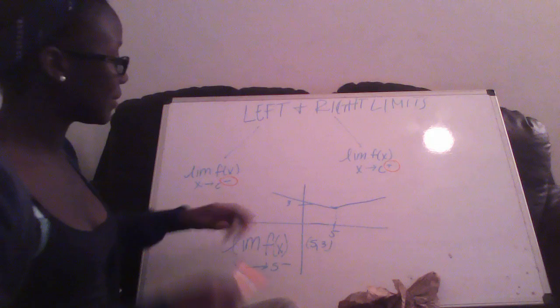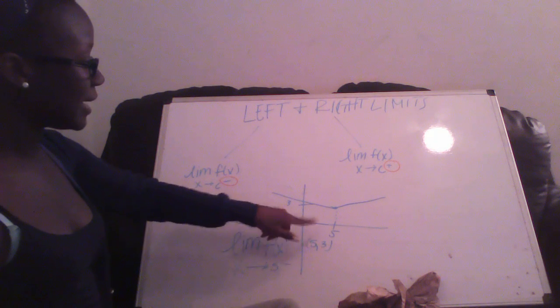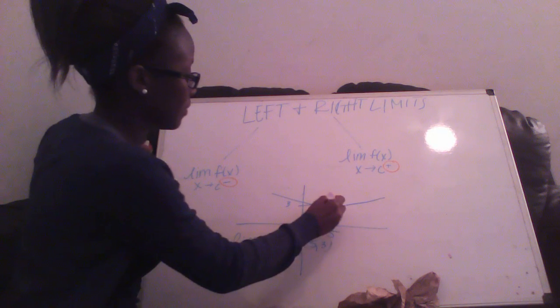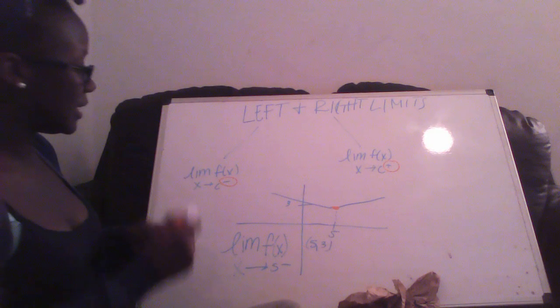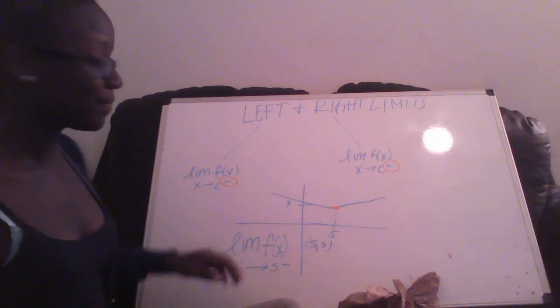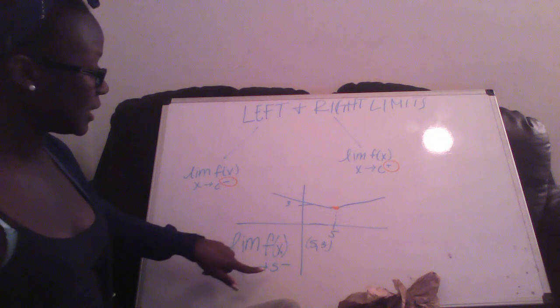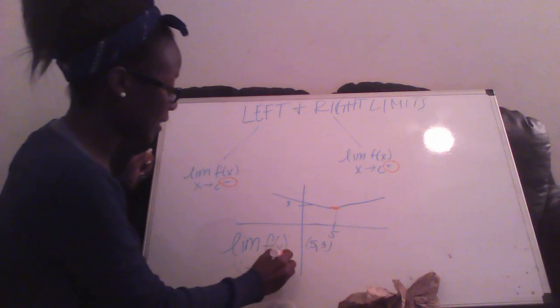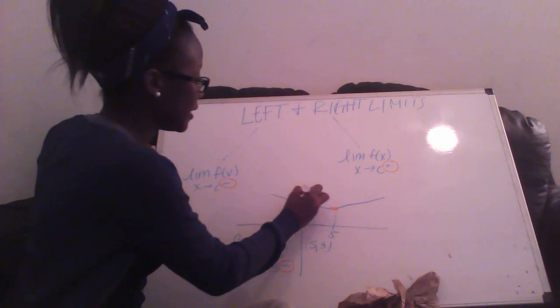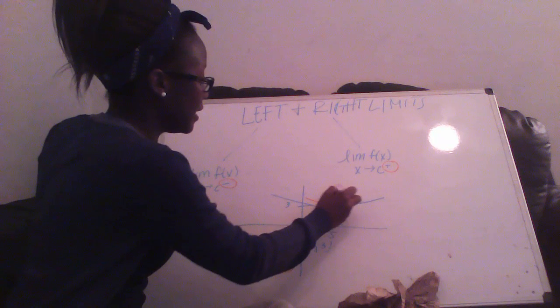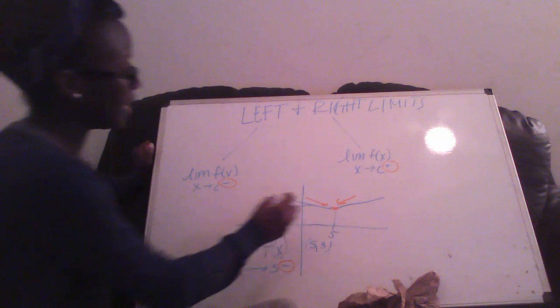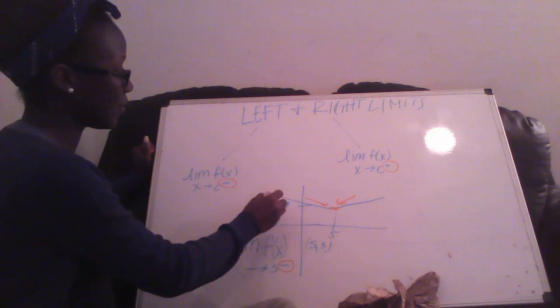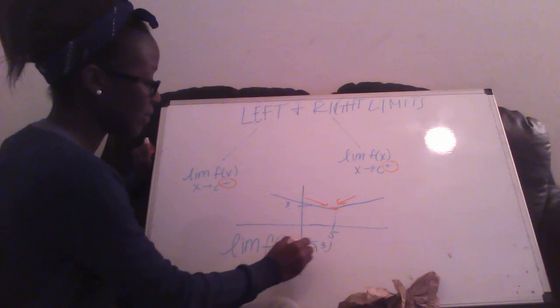An example here is just a point. We're looking for f as it approaches from the left side because it has this subtraction sign here. This is coming from the left side, that's coming from the right. As it approaches coming from the left side, we see that it is at 3. So your answer will be 3.